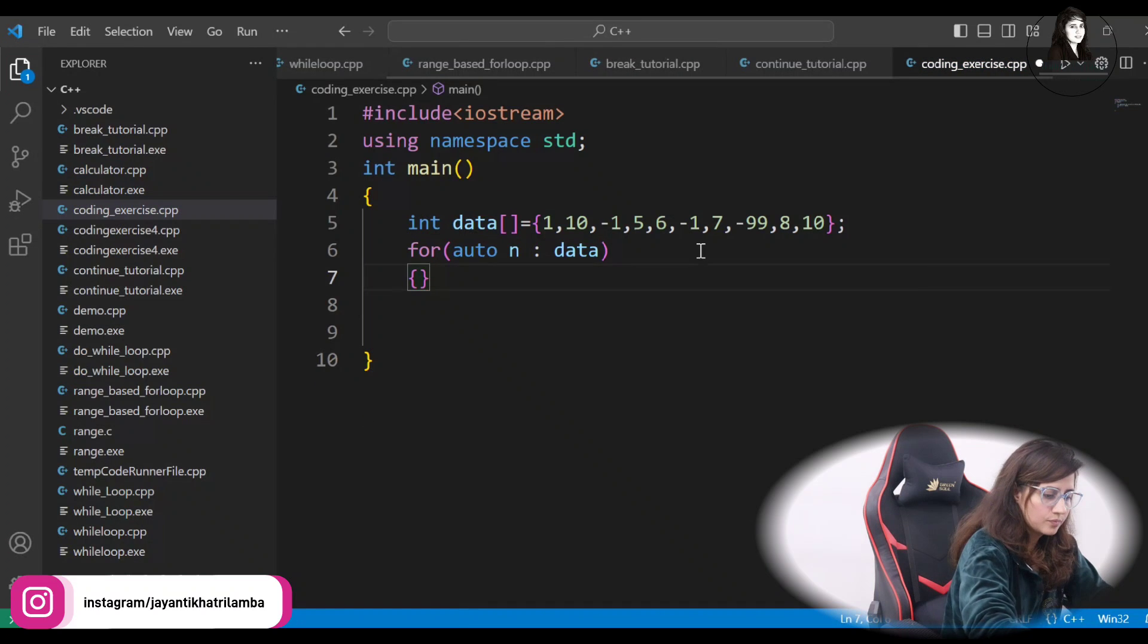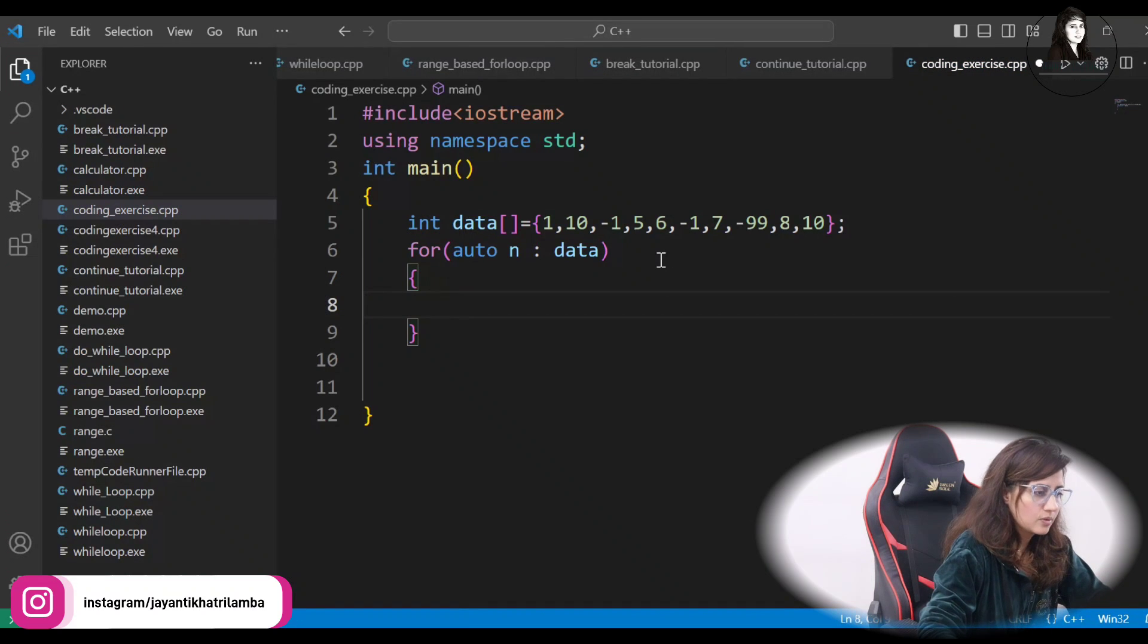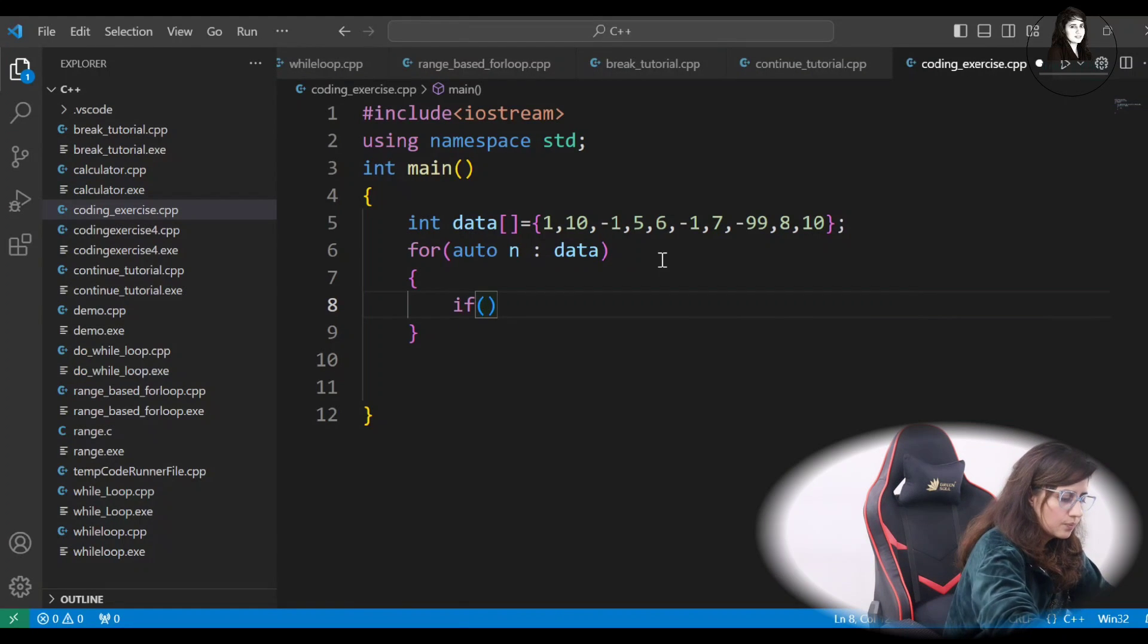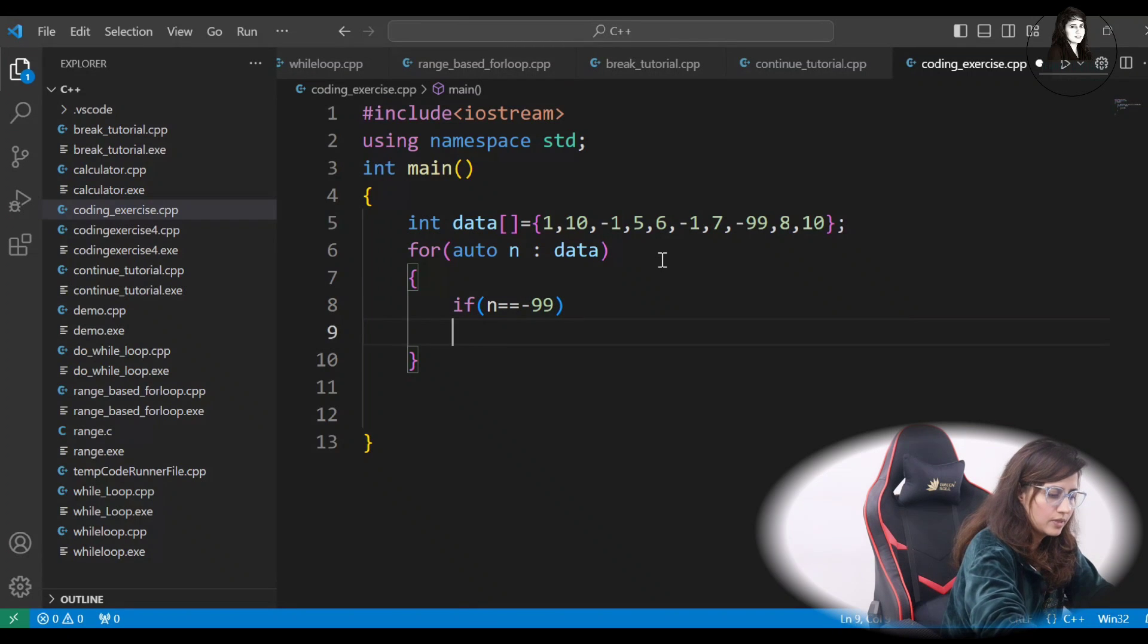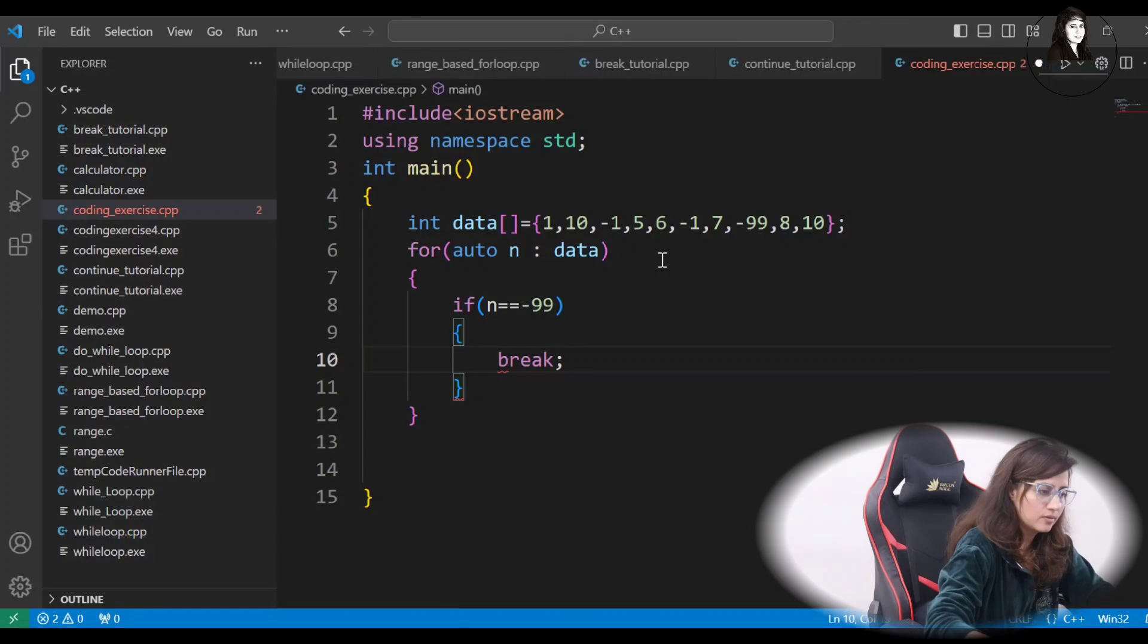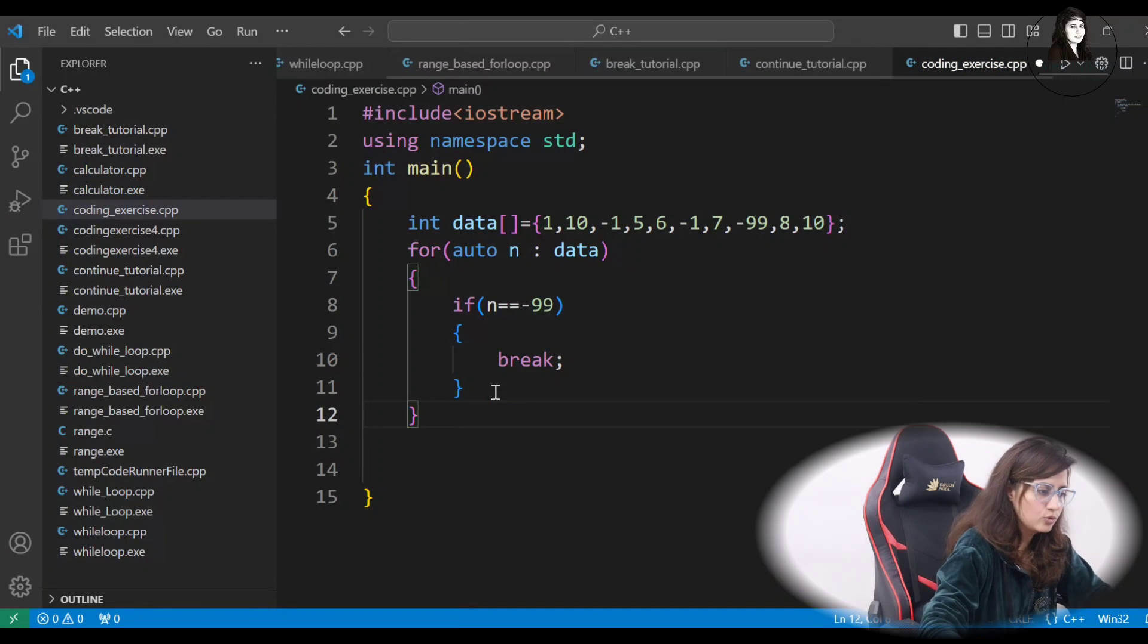So, now, you have to implement the logic. First, let's just write down the stopping condition. If this N equal to equal to minus 99, then break. Means, you don't have to process after that. So, we will use obviously to jump out of the loop, use break.